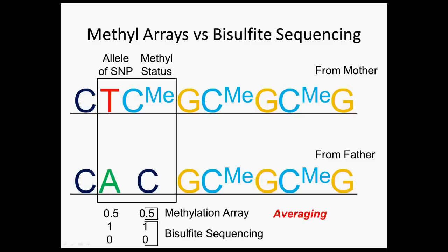However, if we do bisulfite sequencing, we can look at the two copies of DNA separately. For the copy from the mother, for the allele we get a 1 because we have the T allele, and for the methylation status we also get a 1 because our C is methylated. For the copy from the father, for the allele we get a 0 because we do not have the C allele, and for the methylation status we also get a 0. Thus, bisulfite sequencing is able to give us a much finer resolution in addition to being able to look at every base in the genome.